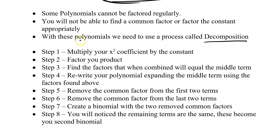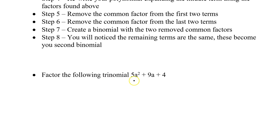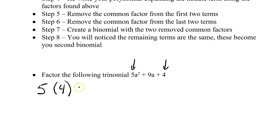We're going to follow eight steps as we work through an example. Step one: take the coefficient of the squared term and multiply it by the constant. For example, factor 5a squared plus 9a plus 4. There's a coefficient in front of the a squared, so regular trinomial factoring is out, and there's nothing common to 5, 9, and 4. So for decomposition, we take 5 times 4, which gives us 20 — positive 20. Step one is done.